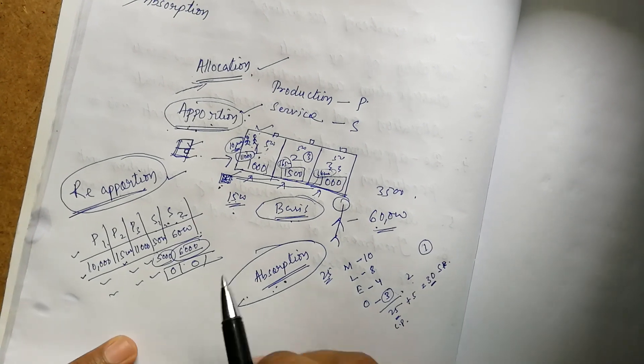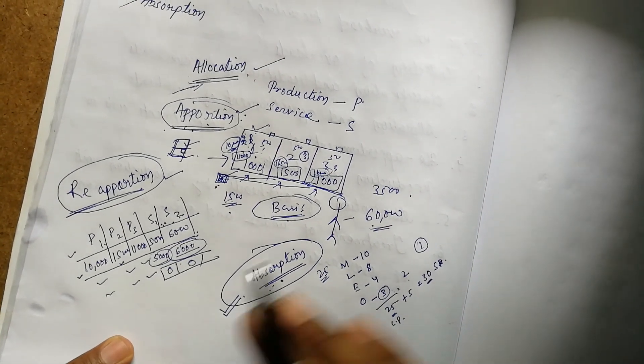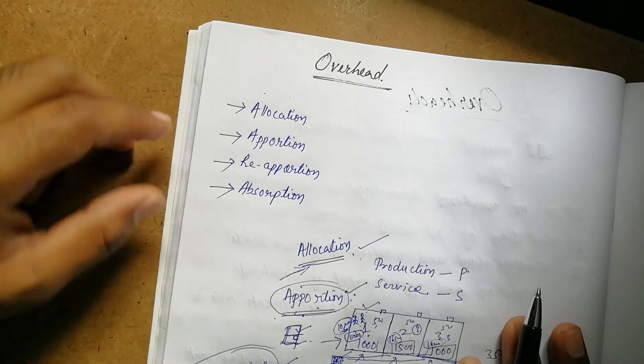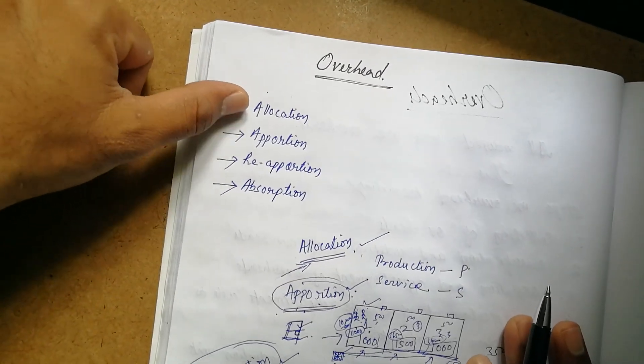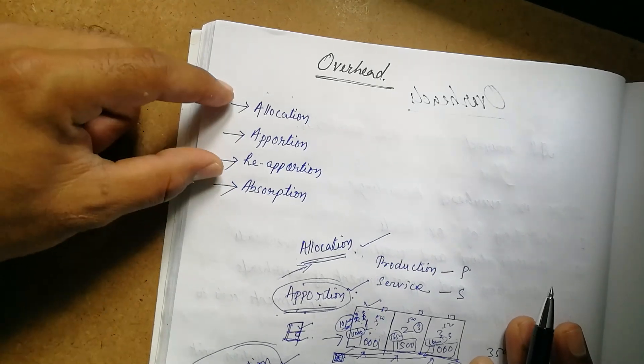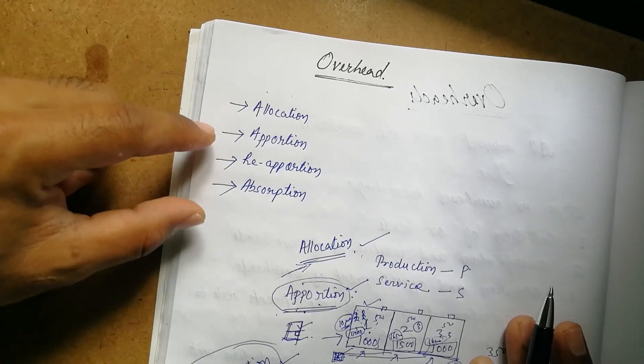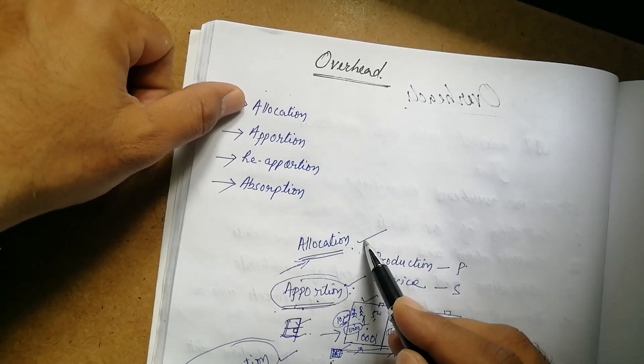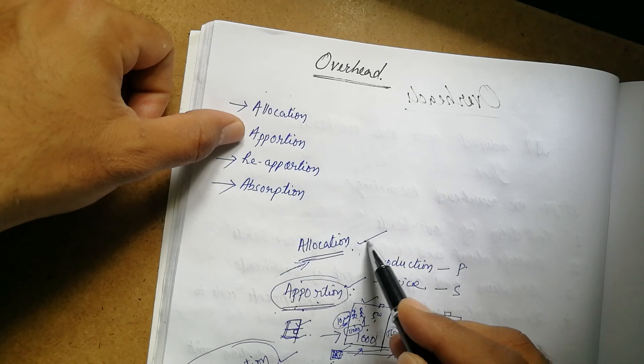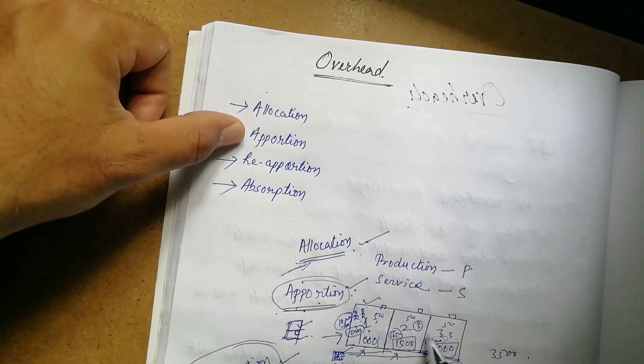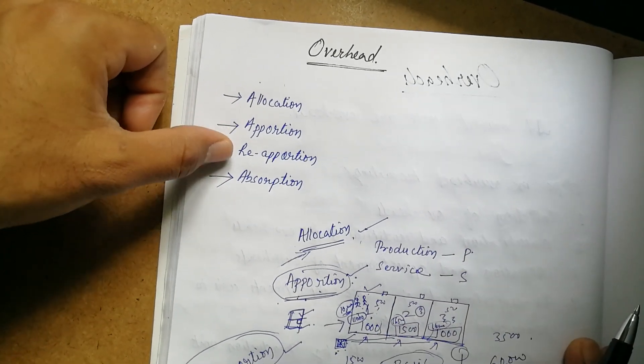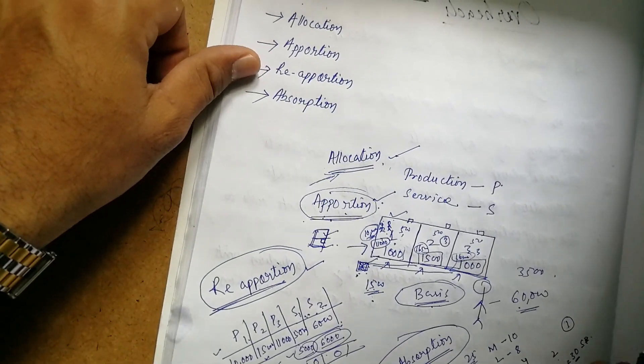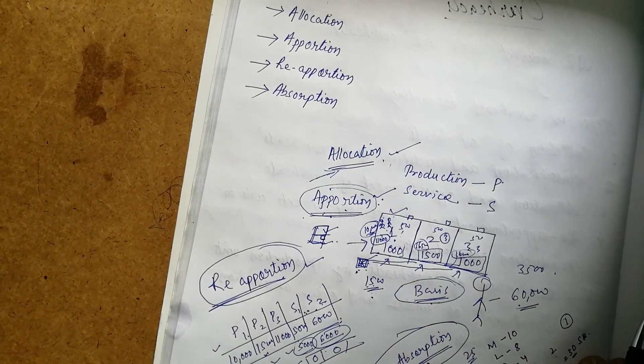So the complete process: allocation, then apportion, then re-apportion. Most questions involve allocation, apportion, and re-apportion with service departments and production departments. Okay, that's all, thank you.